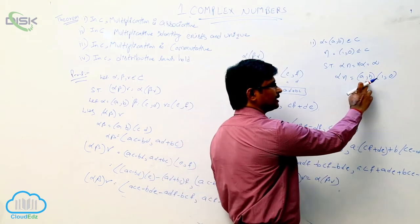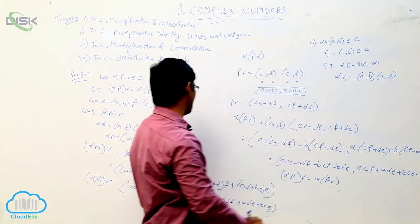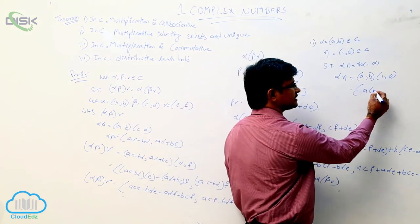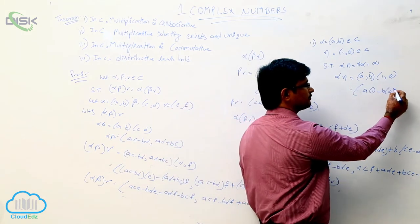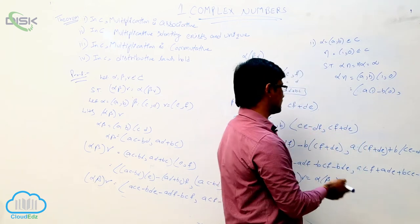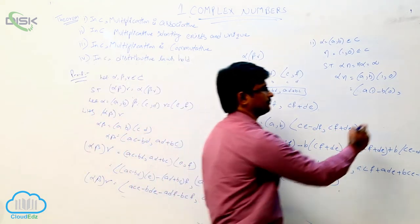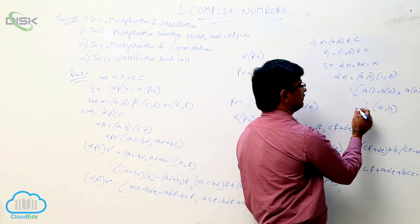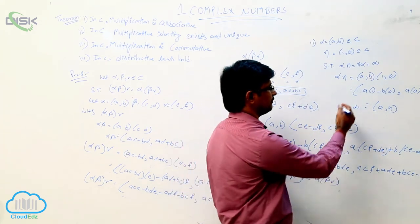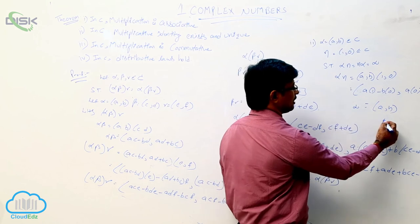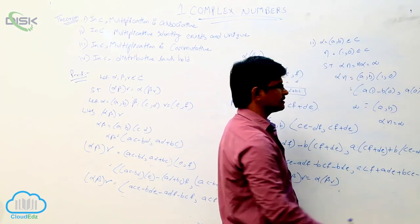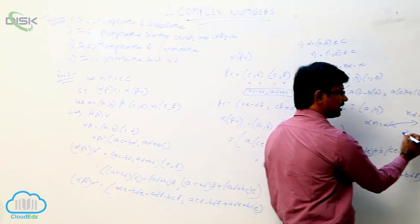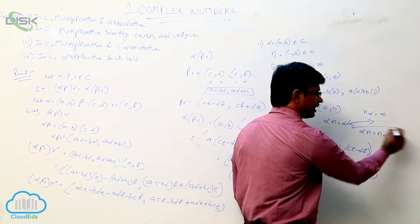Alpha is (a, b) and n is (1, 0). It is in the form (a, b) into (c, d). Applying the formula (ac minus bd, ad plus bc), we get: a times 1 minus b times 0 equals a, and a times 0 plus b times 1 equals b. So alpha into n equals (a, b), which is nothing but alpha itself.